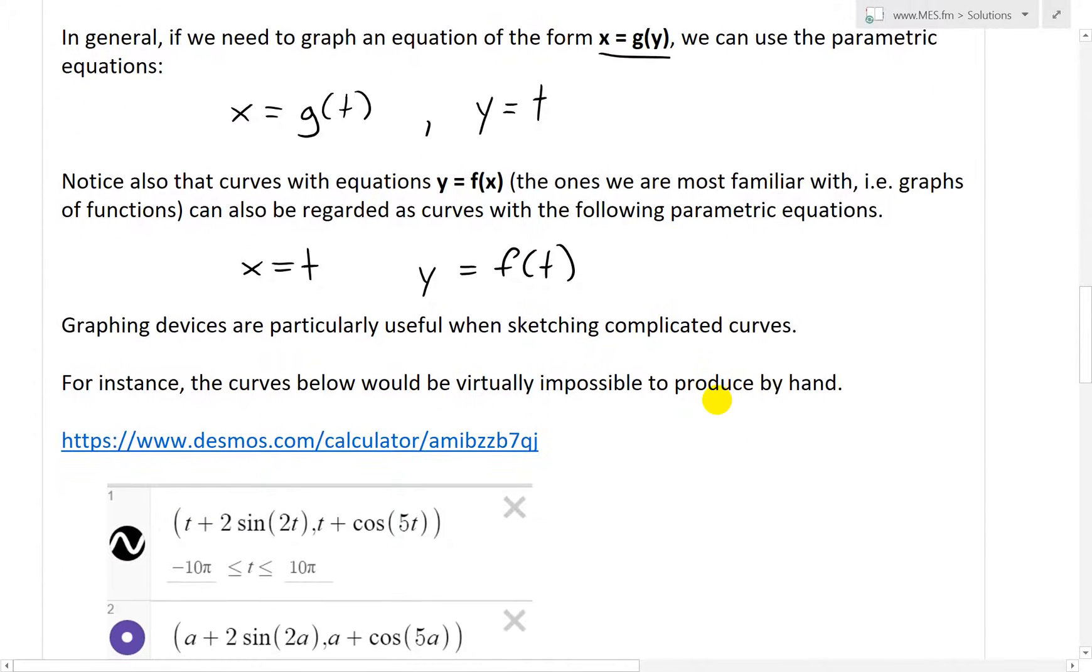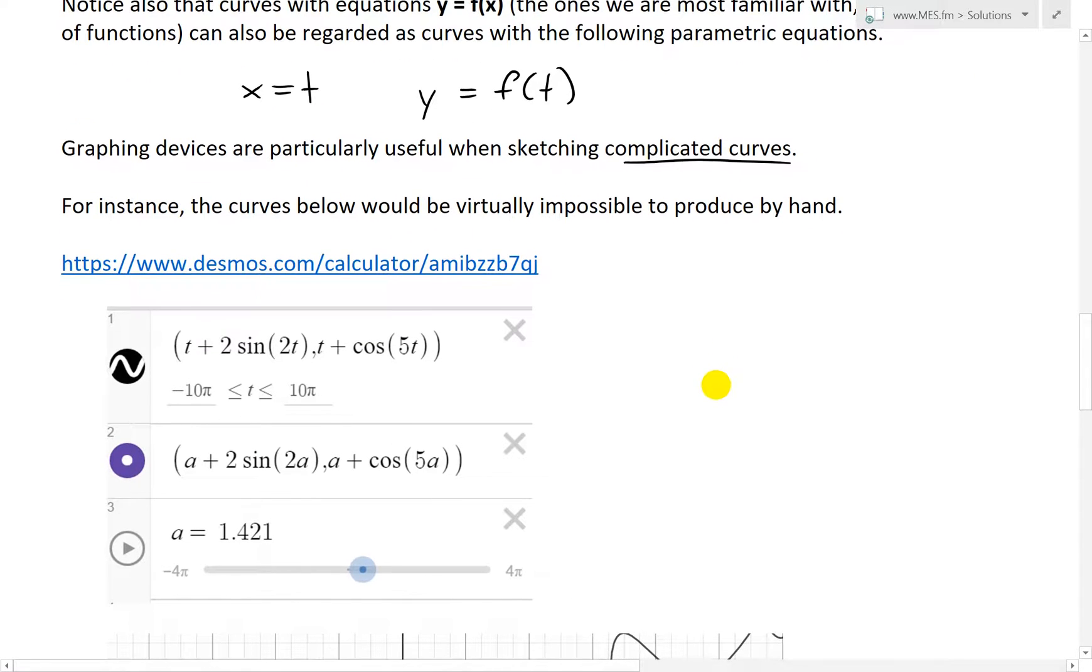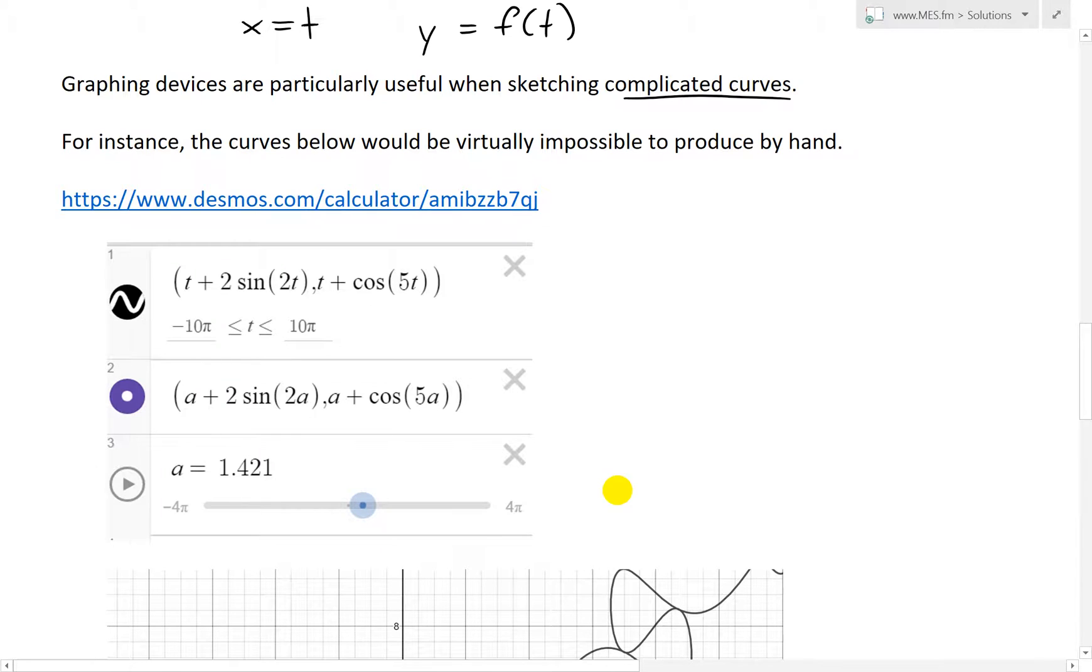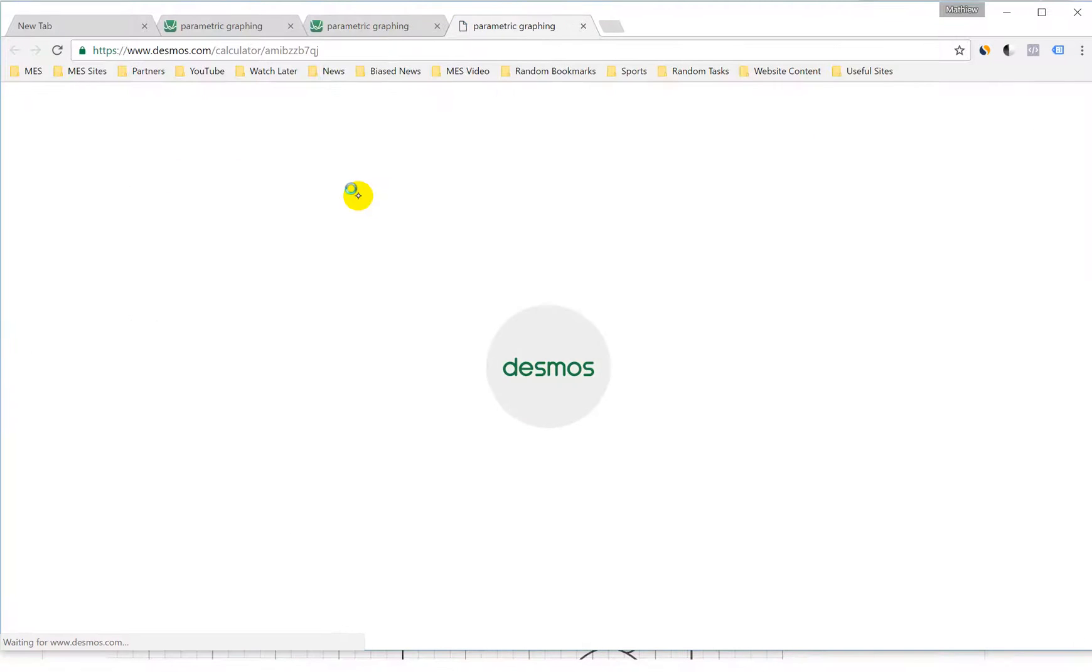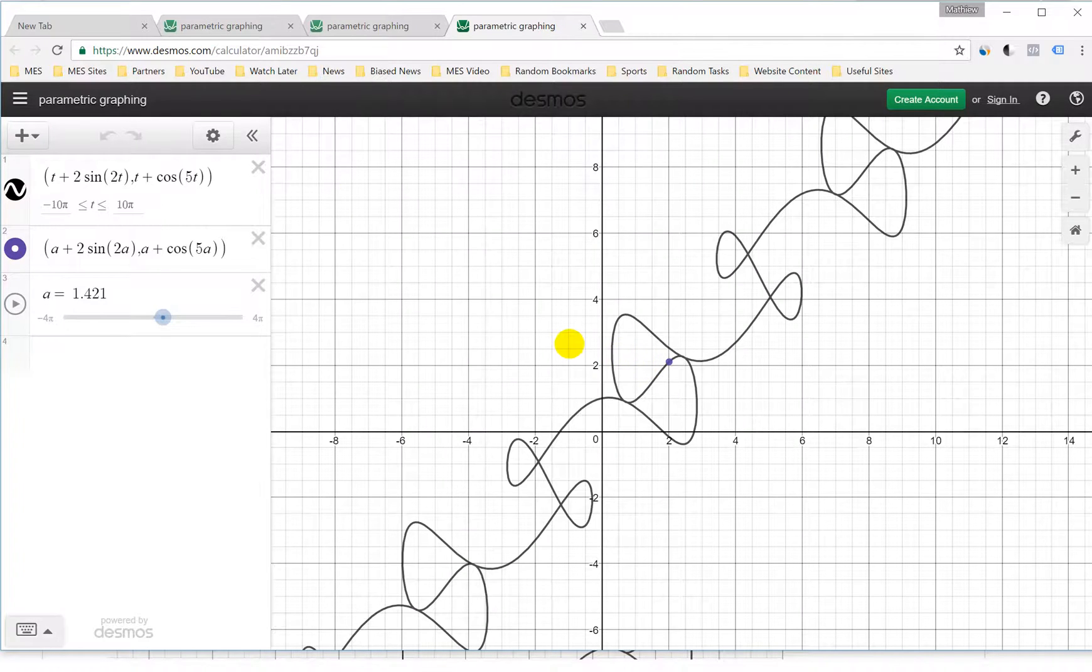As an added bonus, I'm going to go over some really cool graphs. Graphing devices are particularly useful when sketching complicated curves. For instance, the curves below would be virtually impossible to produce by hand. Here's a cool shape like this from the Desmos calculator. If you want to download these notes, this is very cool. You could play around with these.